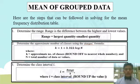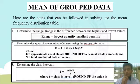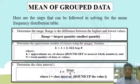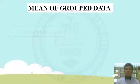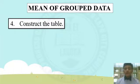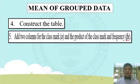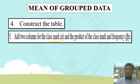Step 3: determine the class interval, or i. i equals the range over k. Where i is the class interval — round up the value of i. Step 4: construct the frequency distribution table. Step 5: add two columns to the frequency distribution table — that will be the class mark and the frequency times class mark column.